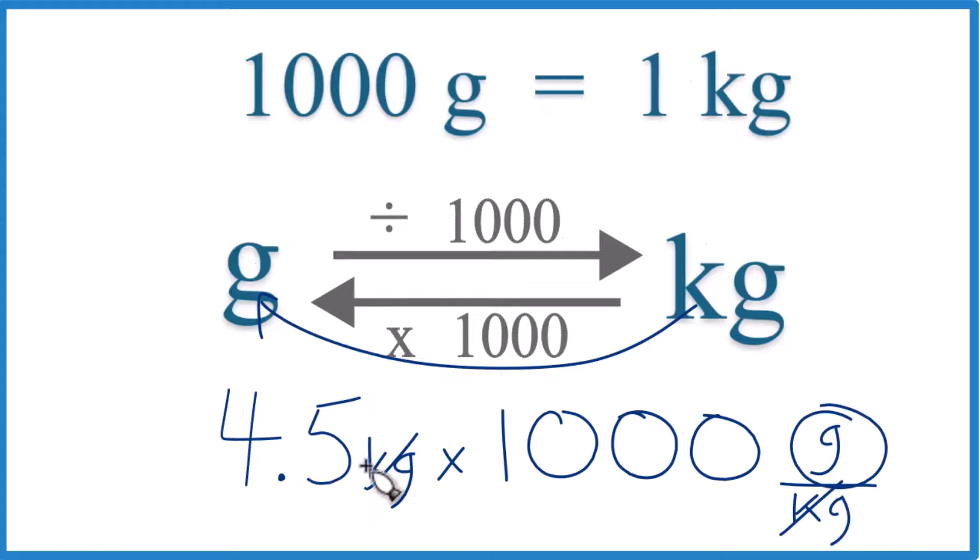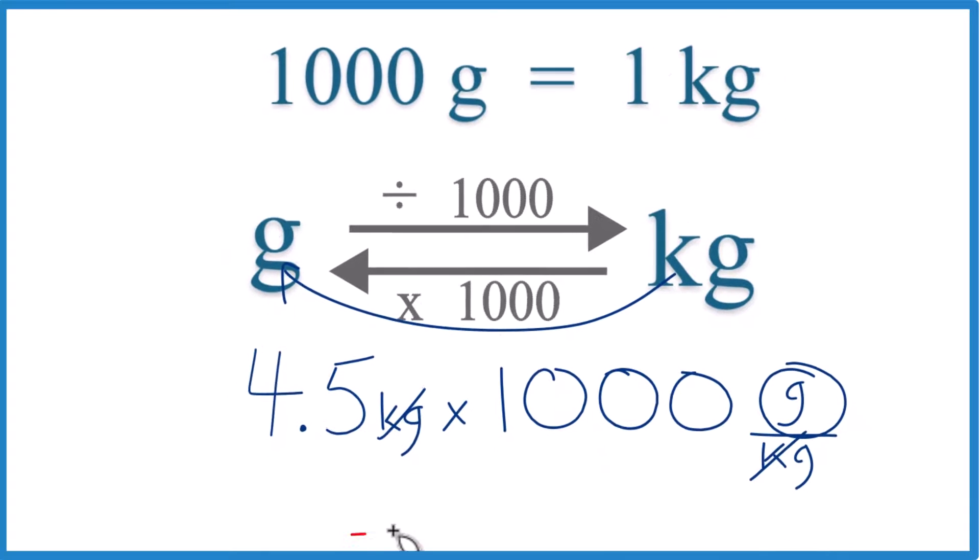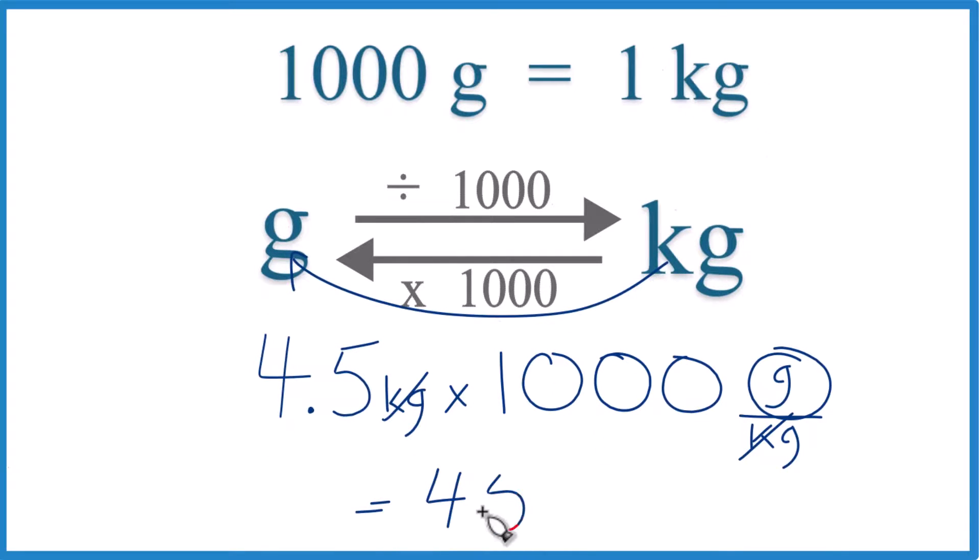So 4.5 times 1000 grams equals 4,500 grams. When we convert from 4.5 kilograms to grams, we get 4,500 grams.